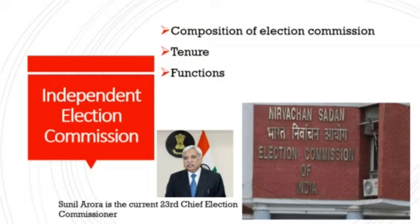To assist the election commission of India, there is a Chief Electoral Officer in every state. The election commission is not responsible for the conduct of local body elections — only national or state elections are conducted by the election commission. The election commission of India can either be a single member or a multi-member body. Till 1989, the election commission was a single member. Just before the 1989 general election, two election commissioners were appointed making the body multi-member. Soon after the elections, the commission reverted to its single member status in 1993.